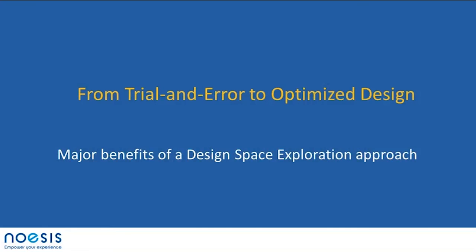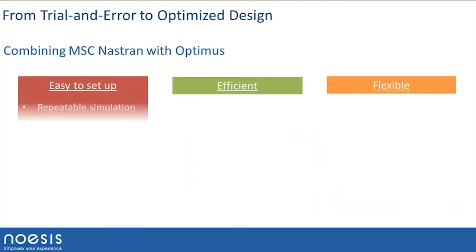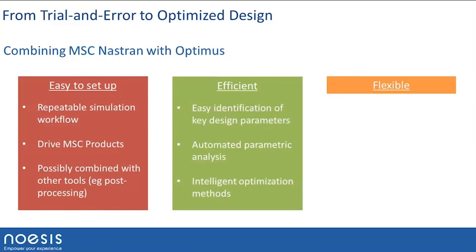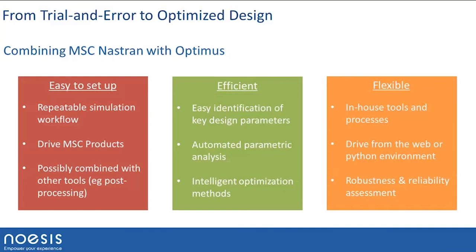In conclusion: Optimus makes it easy to set up a simulation workflow and make it repeatable. We can drive the whole family of MSC products and combine them with other tools — CAD software or post-processing functionality including in-house simulation. Thanks to the embedded technologies — design of experiment, response surface modeling, and so on — we can identify key design parameters, automate parametric analysis, deploy on cluster, and use intelligent optimization techniques. We can work with in-house tools alongside commercial code, driven from a web or Python environment, and assess robustness and reliability.